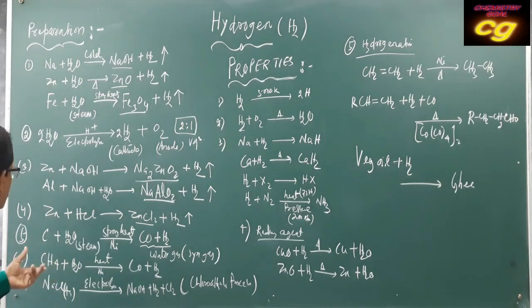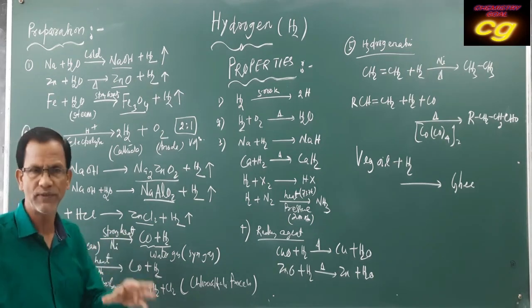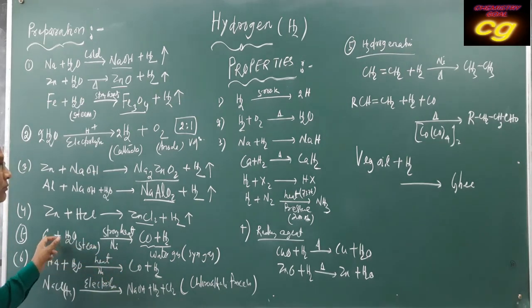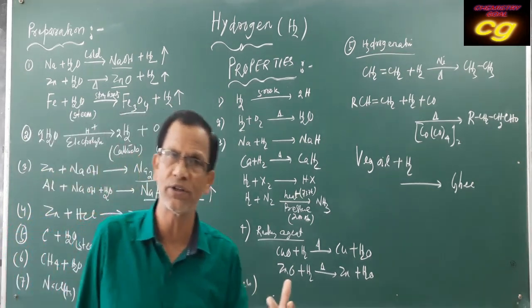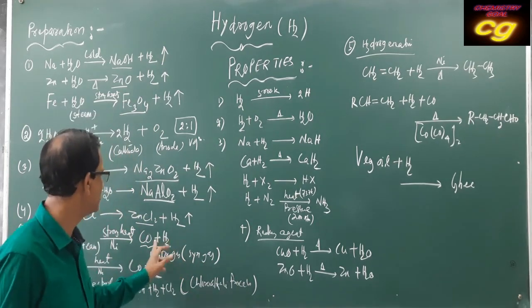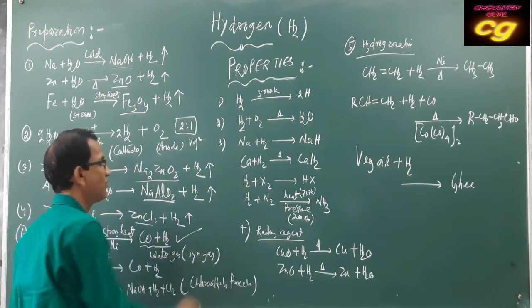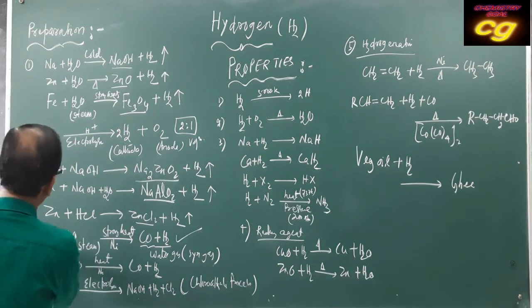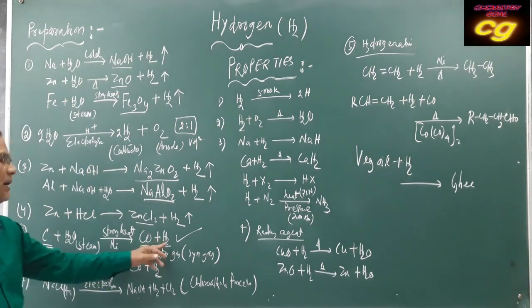Another method is when carbon reacts with steam at very high temperature in the presence of a catalyst — nickel or platinum. Carbon is converted to carbon monoxide and hydrogen. This mixture of gases is called water gas, which is highly essential for the preparation of organic compounds. It is also called synthesis gas. It is prepared from coal.